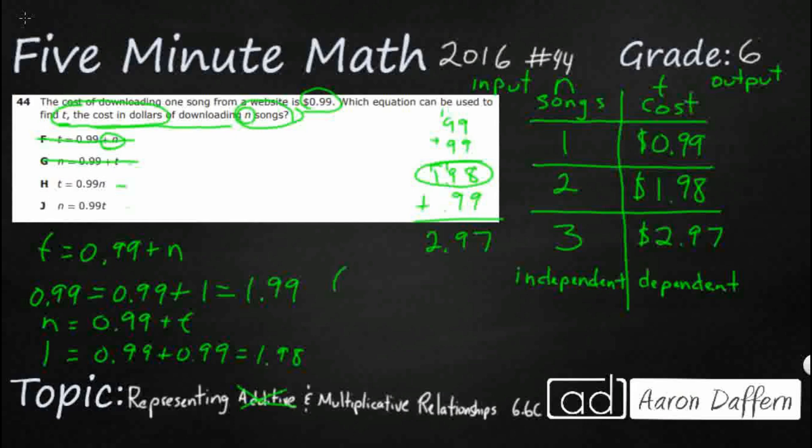Let's look at H: t equals 0.99n. So we've got 0.99 equals 0.99 times 1. Oh, that does work! Or we've got $1.98 equals 0.99 times 2, which means we double it. That works as well. Our answer is H.